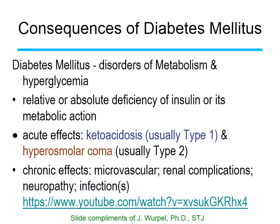The disorder of metabolism that results in hyperglycemia is sometimes referred to as diabetes mellitus. Diabetes mellitus is either a relative or absolute deficiency of insulin, or a deficiency in its metabolic action — meaning the body makes insulin but doesn't respond to it as much as it should, known as insulin resistance. The predominant types are type 1 and type 2, with gestational diabetes being another important type.